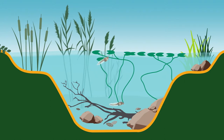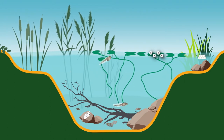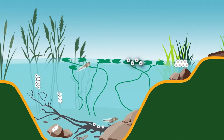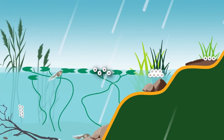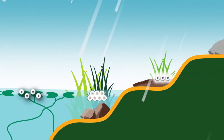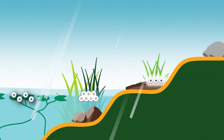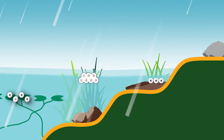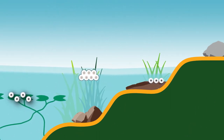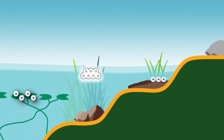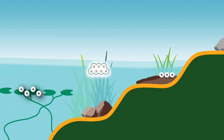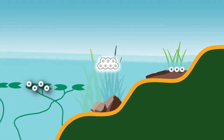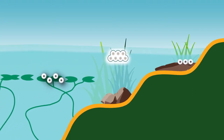Most frogs lay their eggs in water. Some species, such as the Victorian smooth froglet, lay their eggs on land and then wait for winter rains to flood their habitats. Marsh frogs, on the other hand, lay hundreds of eggs among the plants on the surface of the pond and whip them into a foam egg mass.